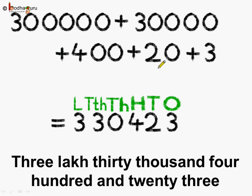2 tens, so 2 goes to the tens place. 4 hundreds, so 4 goes to the hundreds place. Now there are no thousands, so put 0 at the thousands place. There are 3 ten-thousands, so put 3 at the ten-thousands place. Lastly, there are 3,00,000s, so put 3 at the hundred-thousands place.